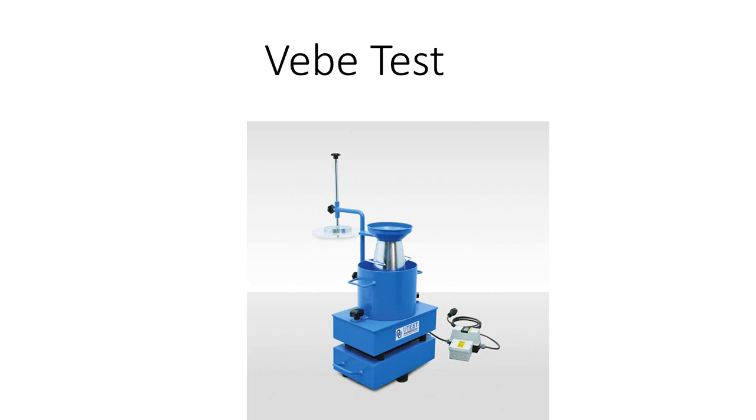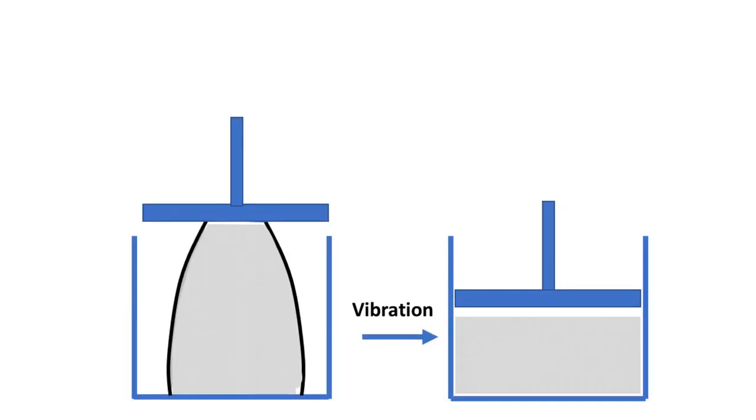VEB test is a laboratory test used to determine the consistency of concrete. VEB time is the time required to transfer concrete from frustum cone into a cylindrical shape using vibration and compaction.